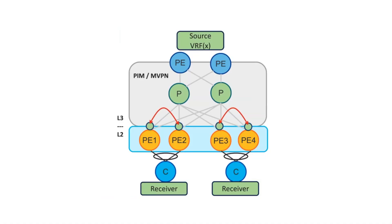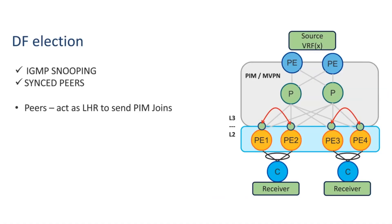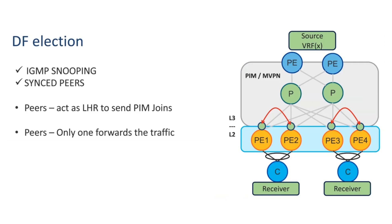Now let's talk about the designated forwarder (DF) election. The DF in EVPN networks is the PE router responsible for sending BUM — broadcast, unknown unicast, and multicast — traffic to multi-homed customer equipment on a given VLAN on a particular Ethernet segment. After IGMP snooping is enabled and synced to the peer, both peers act as last-hop routers and send PIM joins upstream. Once traffic arrives on both peers, only one should forward it to the receiver — the DF election determines which PE does the forwarding. In unicast, both can forward, but in multicast, only one may. That wraps it up for this video — thank you for watching.